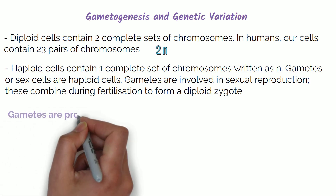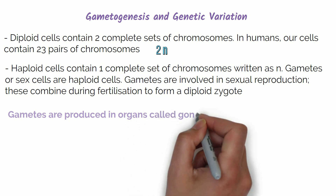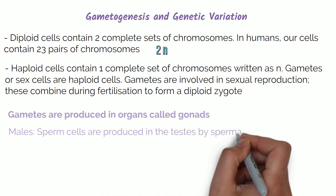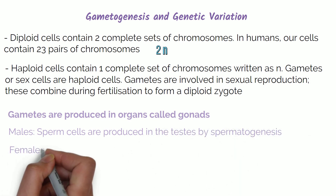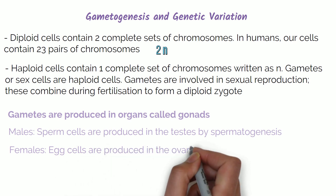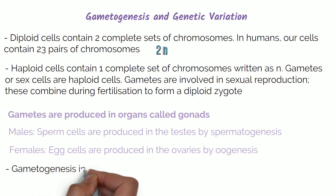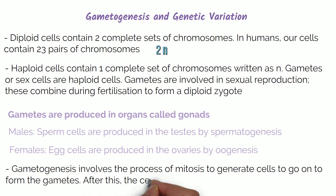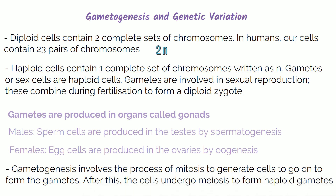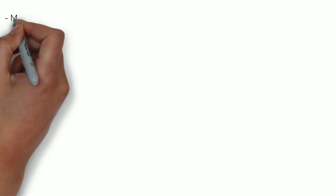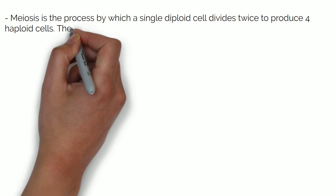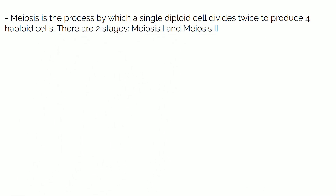In humans, gametes are produced in organs called gonads. In males, sperm cells are produced in the testes by spermatogenesis. In females, egg cells are produced in the ovaries by oogenesis. Gametogenesis involves the process of mitosis to generate cells to go on to form the gametes. After this, the cells undergo meiosis to form haploid gametes. Meiosis is the process by which a single diploid cell divides twice to produce 4 haploid cells. There are two stages: meiosis I and meiosis II.